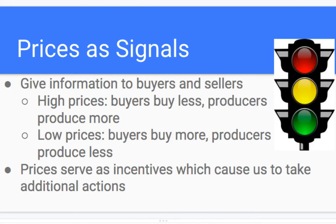Prices are used as signals — they give information to buyers and sellers. High prices mean buyers want to buy less, but producers want to produce more; that same idea of supply and demand where we hit equilibrium. Low prices mean buyers want to buy more, but producers want to produce less, meaning they're not as willing to produce it if there's not as much profit to go around.